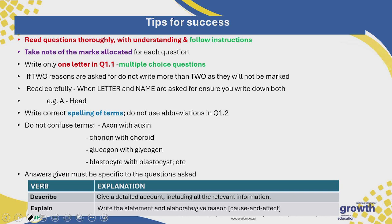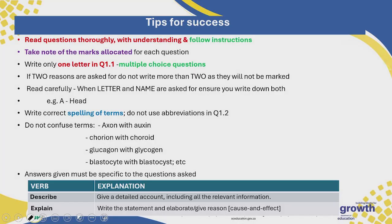Make sure that you understand what the question is asking. It's important to highlight or underline the action verb when you are reading through the question. Questions like 'describe' are asking you to give a detailed account including all relevant information — give a step-by-step account of the situation. 'Explain' questions need you to write a statement and elaborate or give a reason for your answer; they are a cause and effect type of question. When answering an explain question, write a sentence that is worth two marks.